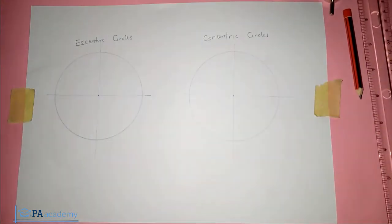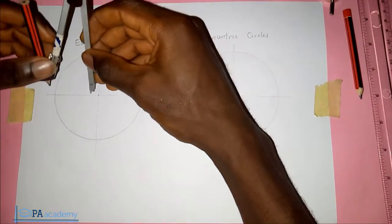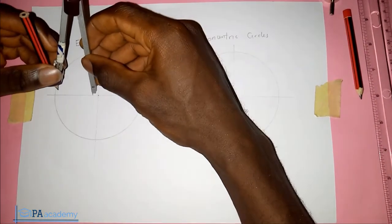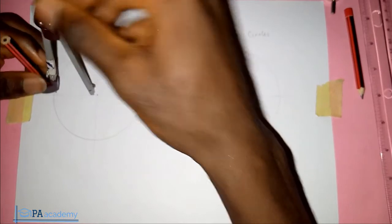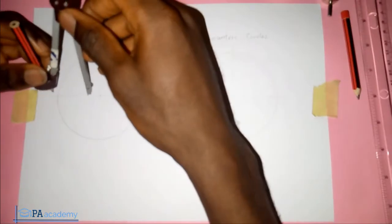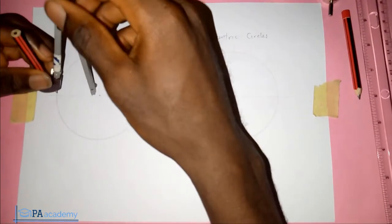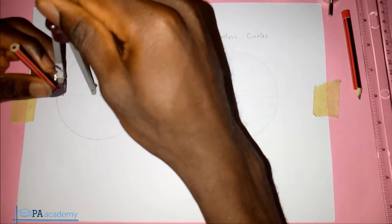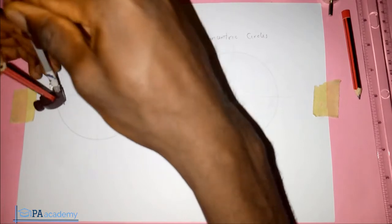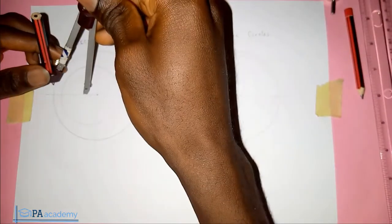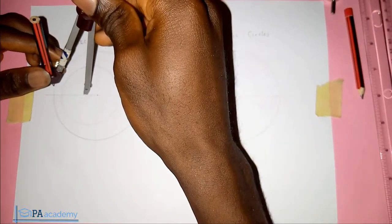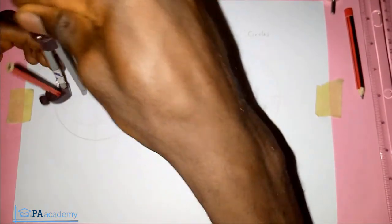So if you have this circle and I want to draw eccentric circles, we can just pick anywhere on this straight line and draw another circle. This is how an eccentric circle looks like.